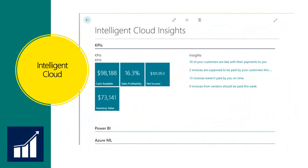Intelligent Cloud Insights is one of the most important new features in Dynamics GP 2018 R2. Your GP data is replicated to the Microsoft Cloud, and users can access it from their favorite device whenever and wherever. Users can have valuable insight into things like cash availability, sales profitability, net income, and inventory value. Next to the KPI charts, you get insights into potential areas of concern like overdue payments. The Intelligent Cloud is a low-cost opportunity to introduce the concept of cloud to your workforce. All you need is a connected mobile device and the Business Central app. If you're looking for a more robust and customizable cloud solution, take a look at our webinar series related to Power BI.